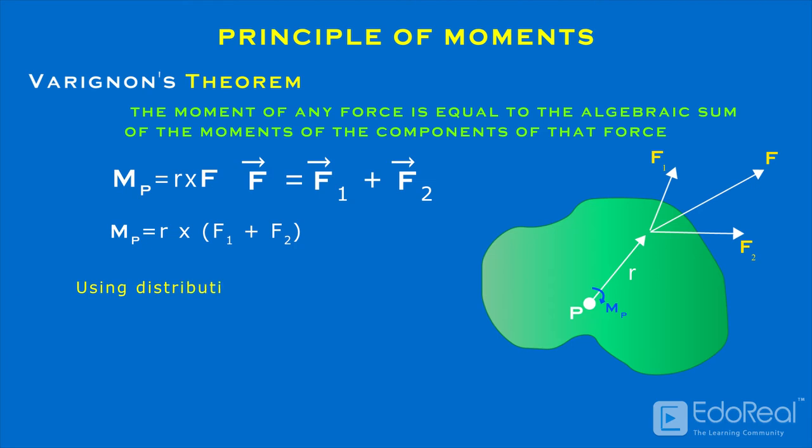Using the distributive law for cross-products, we have, which tells that the moment of F about point P equals the sum of the moments about point P of its components F1 and F2.